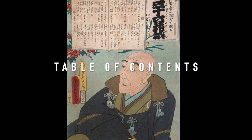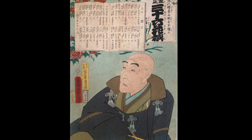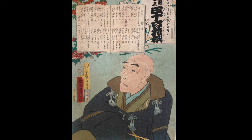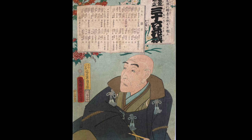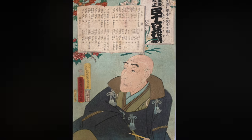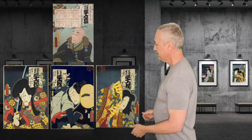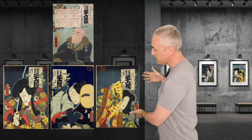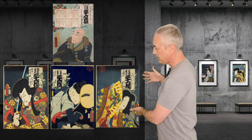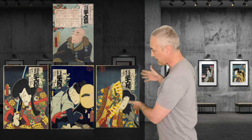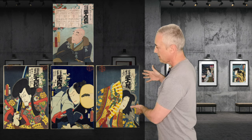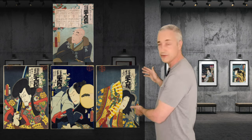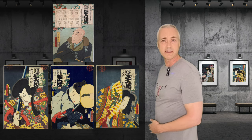This series was done in 1863, and at this point Kunisada is 73 years old. Here are some prints by Kunisada of the 36 Flowers. Aren't they beautiful? I'm really interested in collecting some of these.